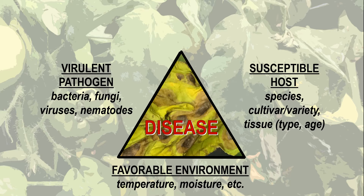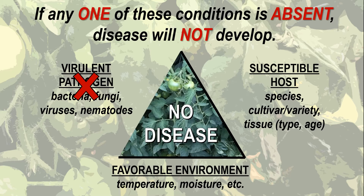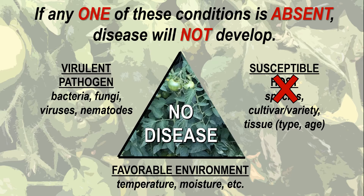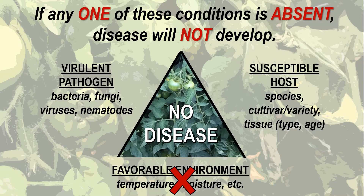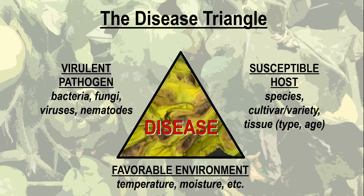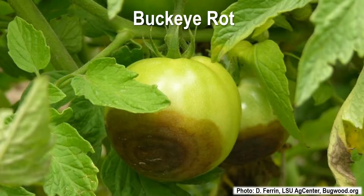However, when one of the conditions for that disease is absent, that disease does not occur. This principle is called the disease triangle and is used to determine which disease management methods are suitable for each disease. Today's lesson will discuss the disease buckeye rot.